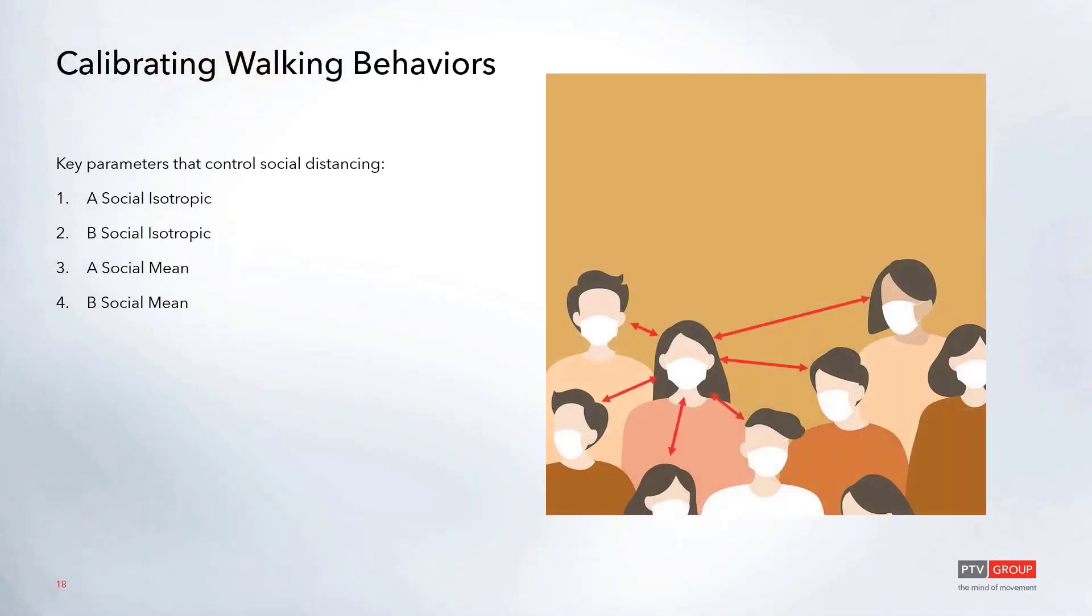So the key parameters we're going to be looking at are the A social isotropic, the B social isotropic, the A social mean, and the B social mean. And the reason we're talking about these is because social distancing is a large topic right now, and these control the person-to-person interactions most effectively. Other parameters like tau and lambda talk about queuing and wave propagation and things like this, but this is the base level, the Weedman parameters of the headways for pedestrians.